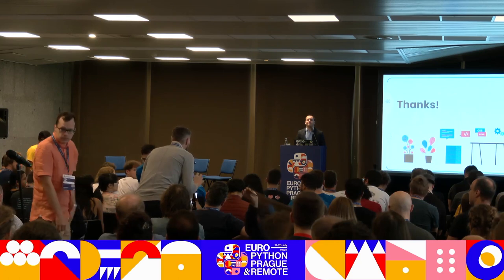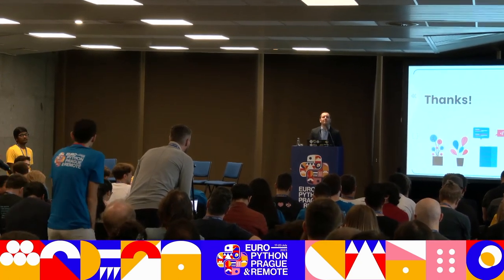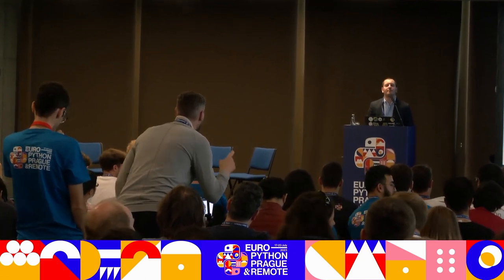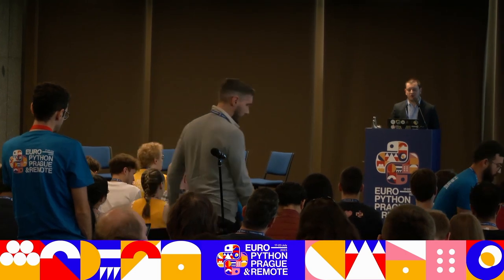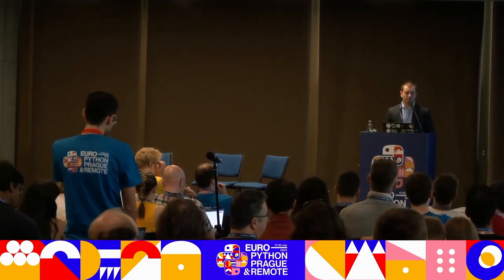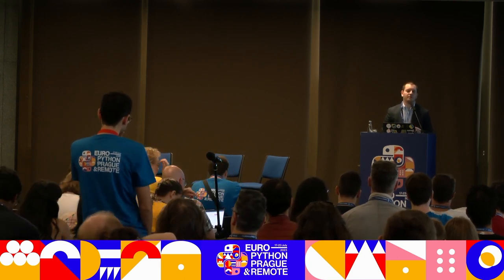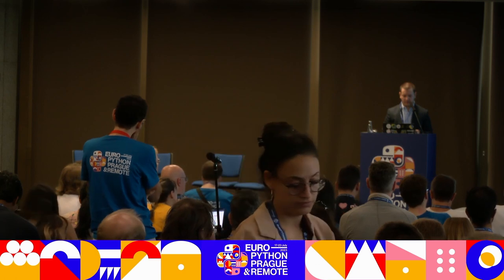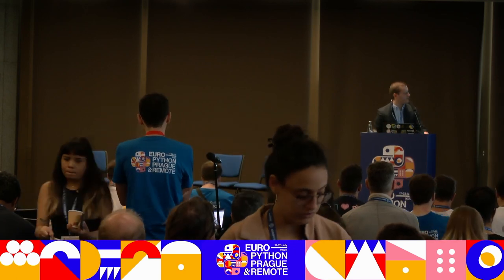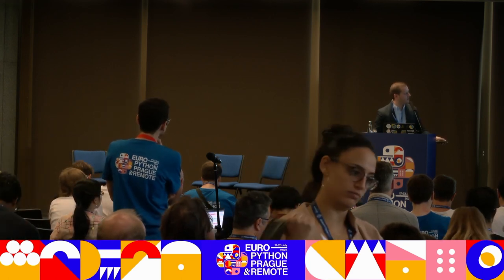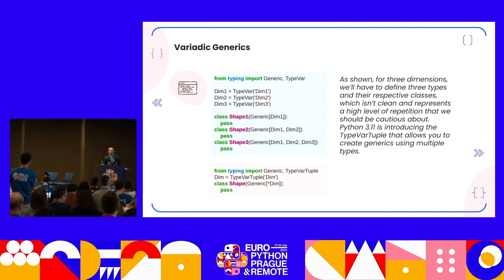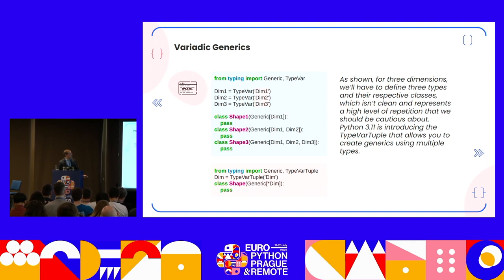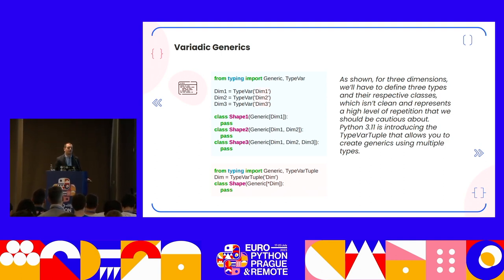Q: Could you re-explain variadic generics and what it's used for with the Dim example? A: It's a concept for cleaner code where we can combine generics — they will be kind of packed. As shown in the example, instead of defining separate lines for each dimension, we have one line using TypeVarTuple. During the class definition, you can use it as an argument to the class. That's what the variadic generics concept is in Python 3.11.